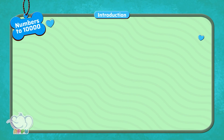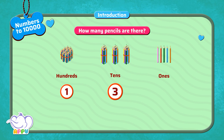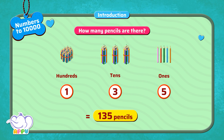Earlier we learnt how to count till 1,000. Let's quickly recap with one example. How many pencils are there? There are one hundreds, three tens, and five ones. So there are one, three, five pencils. So in all, there are one hundred and thirty-five pencils.